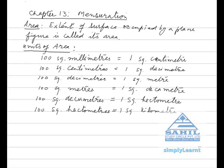100 square decimeters is equal to 1 square meter. 100 square meters is equal to 1 square decameter. 100 square decameters is equal to 1 square hectometer. 100 square hectometers is equal to 1 square kilometer.